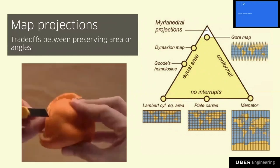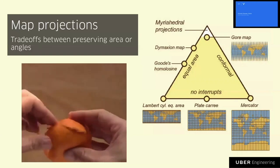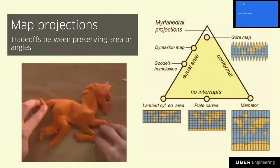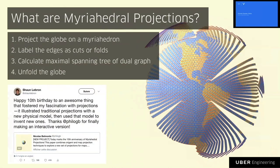A more illustrative example: you have a bergamot, you do a bunch of cuts, and if you do enough of them you can unfold it without any area or angle distortion. So where exactly are myriahedral projections? The idea is you project the globe into a structure called a myriahedron — think of it as a graph, not a mesh. You label the edges of this graph as cuts or folds. The red lines are cuts, and the folds are edges connecting multiple faces of this dual graph. Then you calculate a spanning tree and unfold the globe.